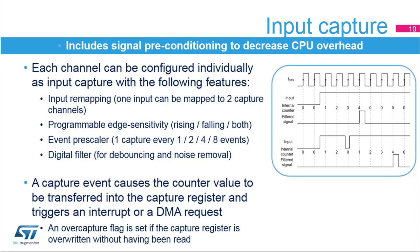Spurious transition events due to noise or bounces can be removed using a programmable digital filter. A clean rising edge capture is triggered four sampling periods after the rising edge. In the lower case, a glitch causes the filter counter to be reset and the capture to happen after four successive samples at high level have been counted. Once the capture trigger is issued, the timer's counter is transferred into the capture register and an interrupt or DMA request can be issued. If a new capture occurs before the previous one had been read, the capture register is overwritten and an overcapture flag is set.